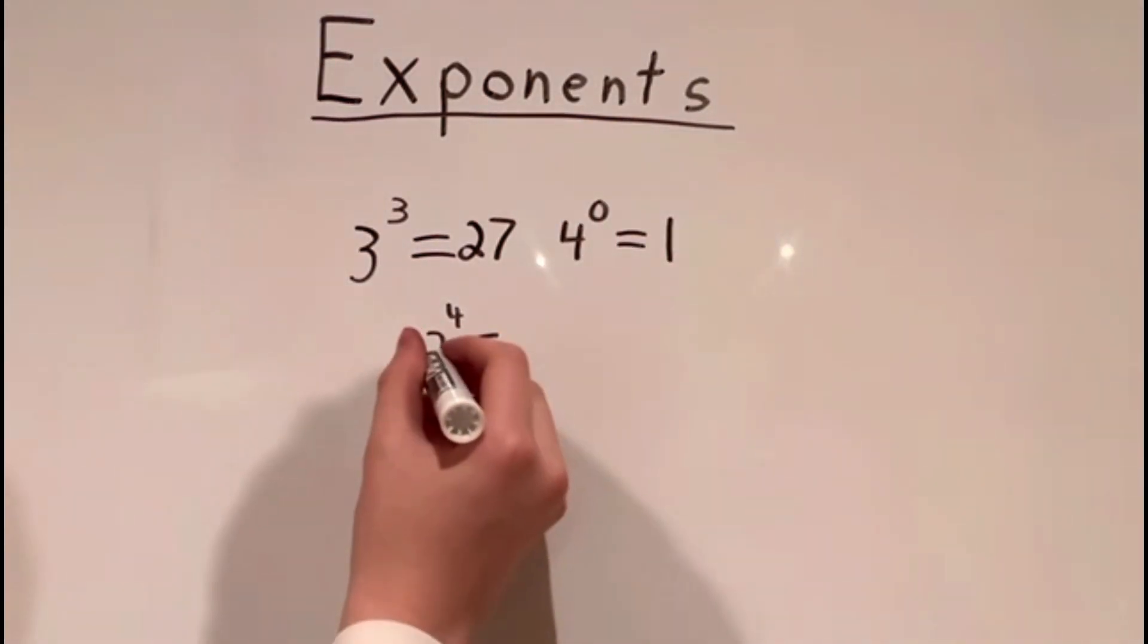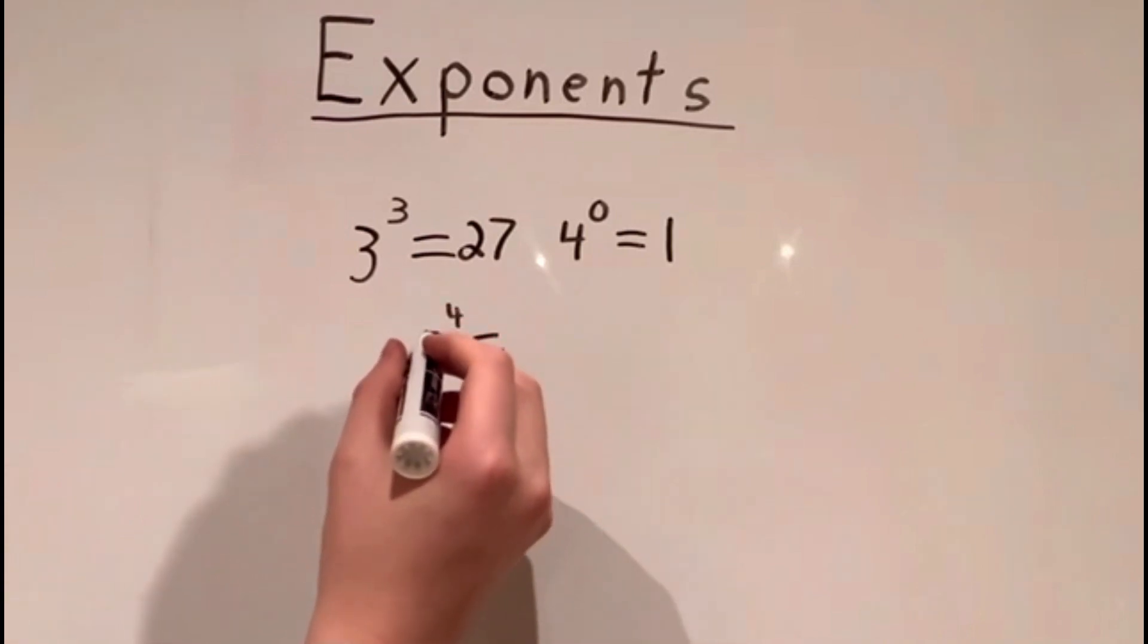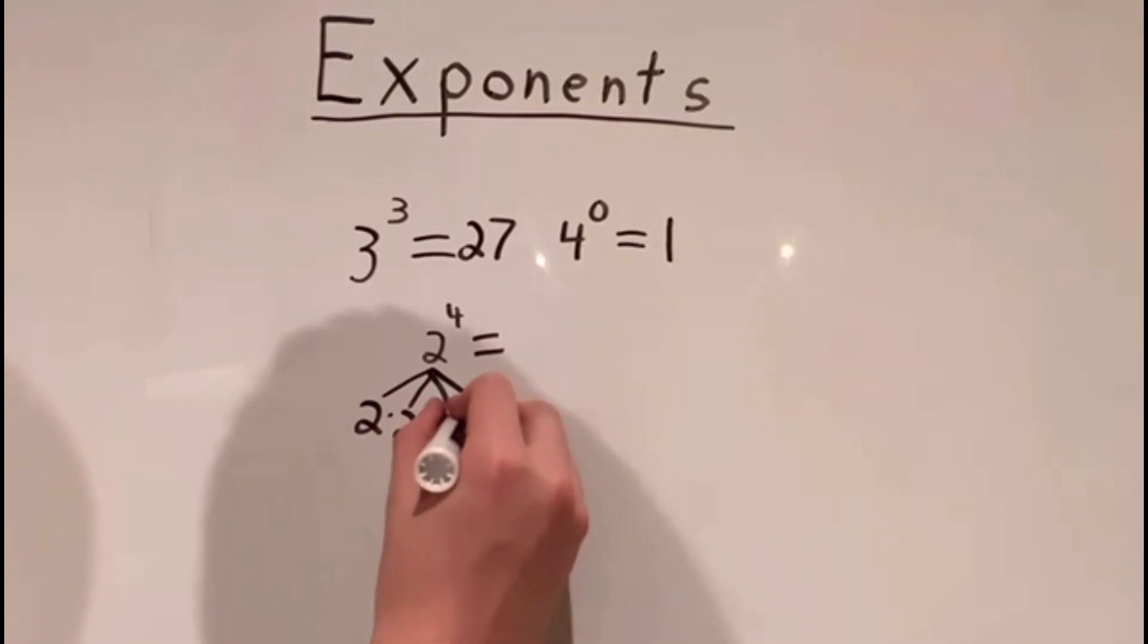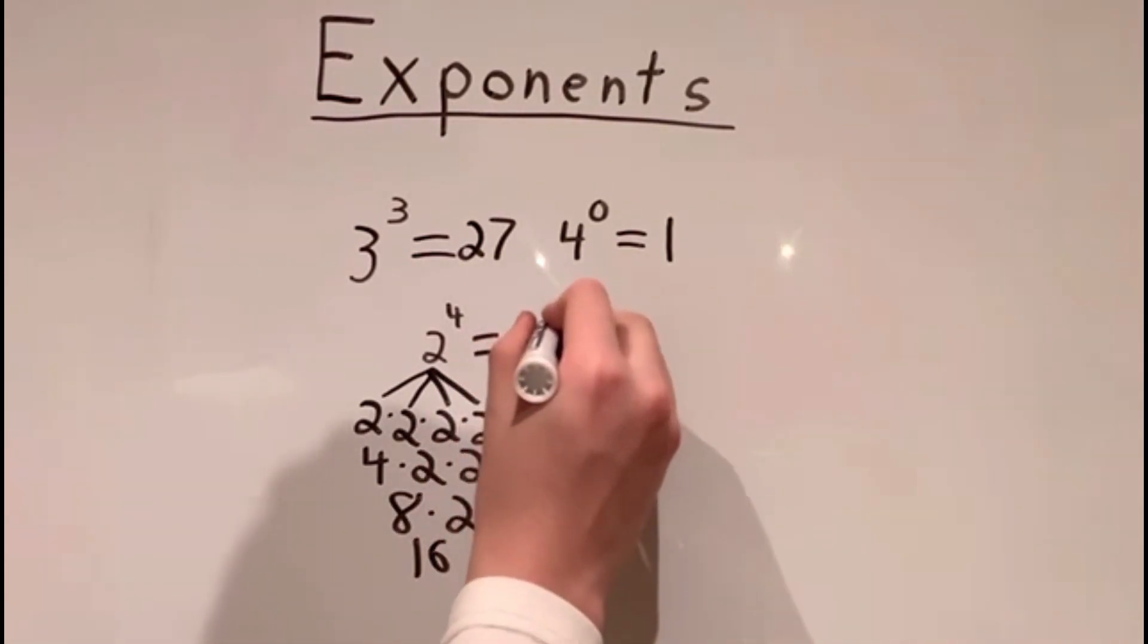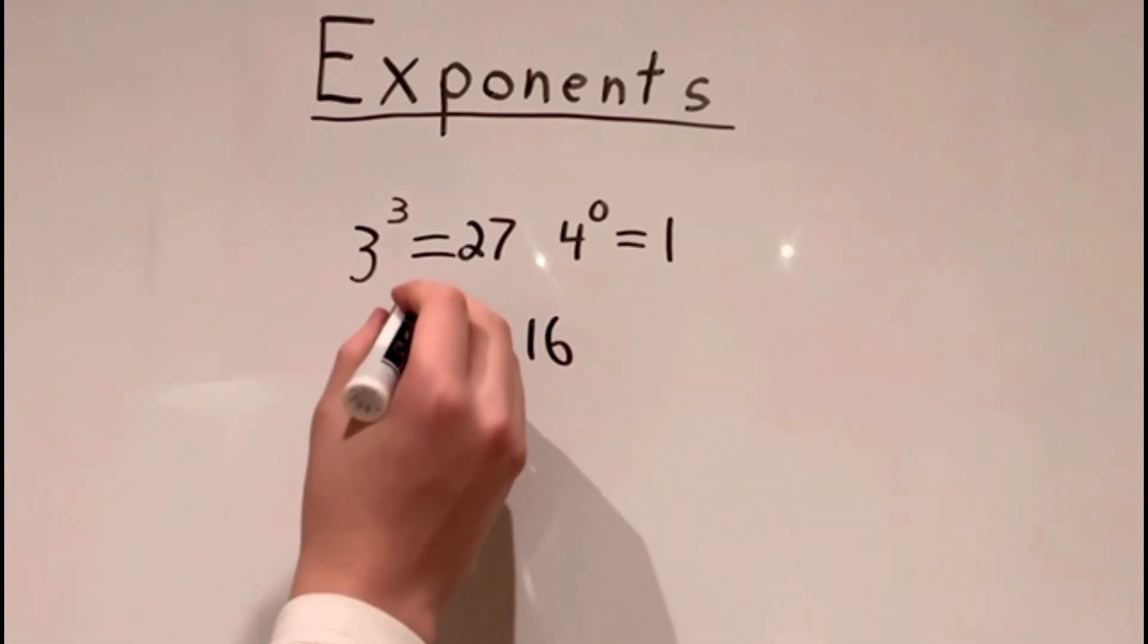Now we have 2 to the power of 4. This is 2 times itself 4 times. So we have to write 4 twos here. 2 times 2 times 2 times 2. So 2 times 2 is 4, and we have to multiply that by 2, and we have to multiply that by 2. So 4 times 2 is 8, and we have to multiply that by 2. And 8 times 2 equals 16. So 16 would be our answer. 2 to the power of 4 equals 16.